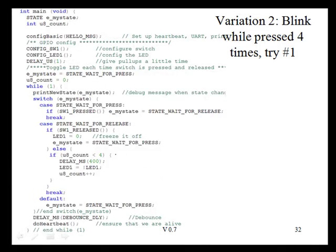The first problem was that it only blinked twice when we pressed the button. We wanted to blink four times and we compared against four. But when I toggle the LED, that's going to turn it off — a complete blink is both an off and an on. So I need to change this to a value of eight instead of four if I actually want four blinks. Two toggles equals one blink.